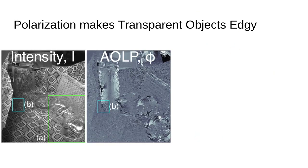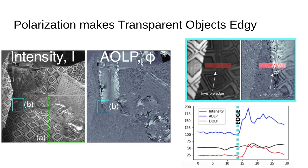Let's take a look at some edges now. Here, we show an example of a glass where the edge practically disappears in the intensity image. However, in the angle of linear polarization, the edge is clearly visible. This allows for better segmentation. And we verify this edge in the graph below. So I guess you could say polarization makes transparent objects a little bit edgy.